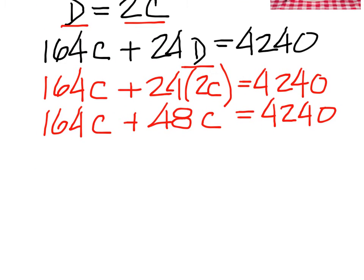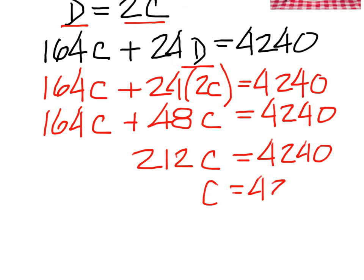Then I would have to add 164C and 48C to come up with 212C. Divide the 4240—sloppily written—by 212, and you'll come up with the cost of a cat being $20.